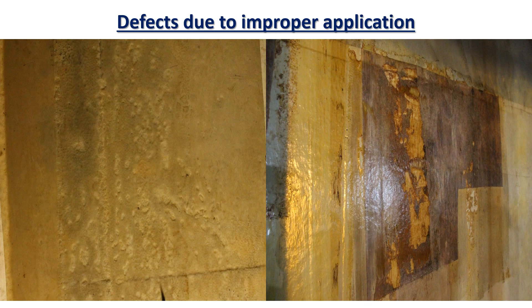In the first image, you can see some depressions in the GRE lining. This is because of insufficient gel coat applied on the fiberglass mat and tissue layer. After applying the final gel coat, the underneath layer of fiberglass mat and tissue absorbs the gel coat from the top layer, which is why the final surface of the lining looks uneven. In the second image, you can see some dark-colored areas in the lining where the final gel coat is missing, so the fiberglass tissue layer absorbs the color of the stored product in the storage tank.